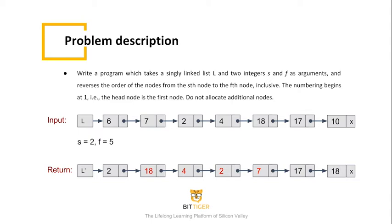We are not allowed to allocate space for this problem, which means we have to do the reordering in place. For example, for a given linked list L, S equals 2 and F equals 5.